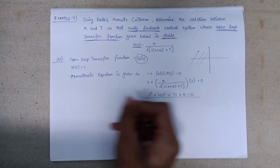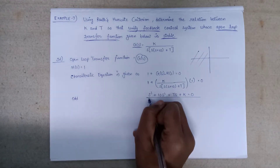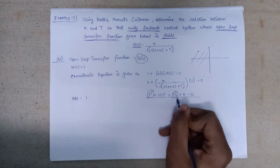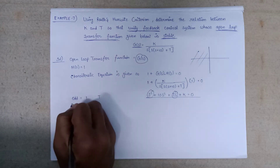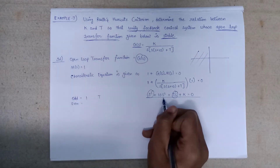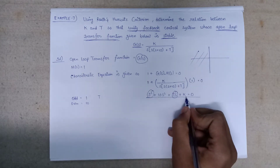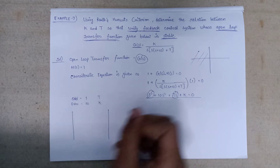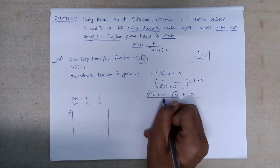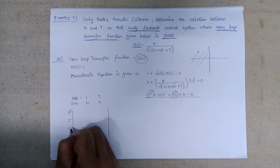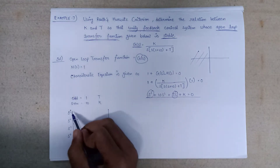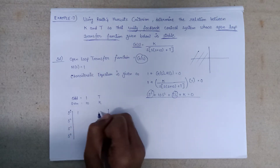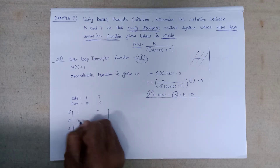The odd coefficients of s are: the coefficient of s³ is 1, and the coefficient of s is t. The even coefficients are: the coefficient of s² is 10, and the coefficient of s⁰ is k. The highest power is s³, so we write odd power coefficients first — 1 and t — then even power coefficients — 10 and k.